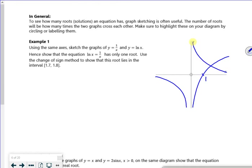Use change of sign between 1.7 and 1.8. So 1 over x is equal to log x. So I'm going to do 1 over x minus log x is equal to 0. So my function, my rearranged function is that.